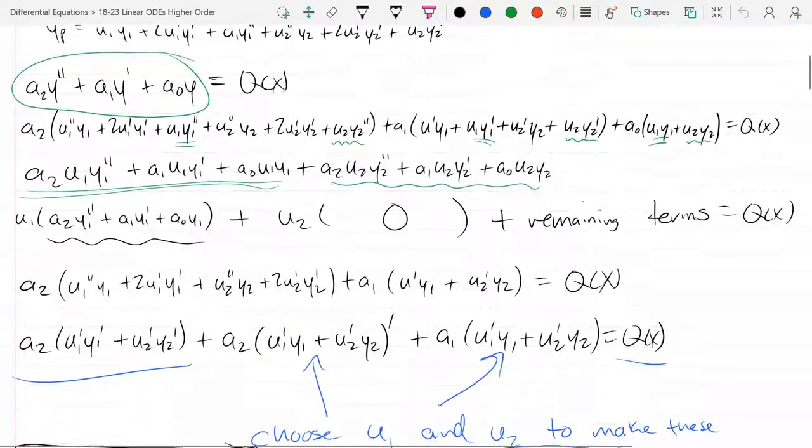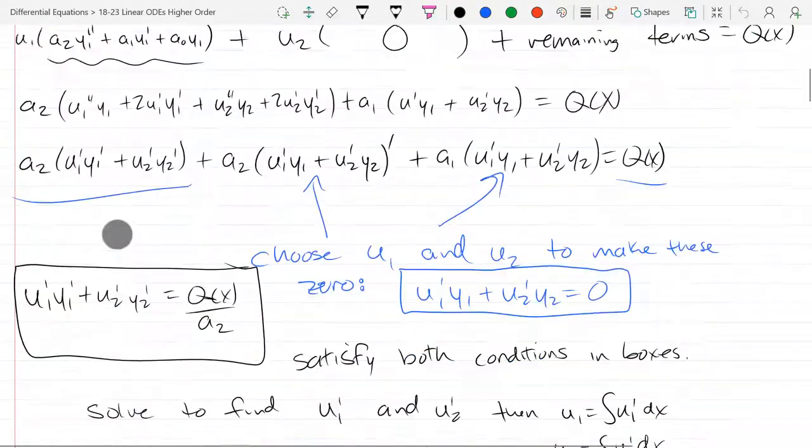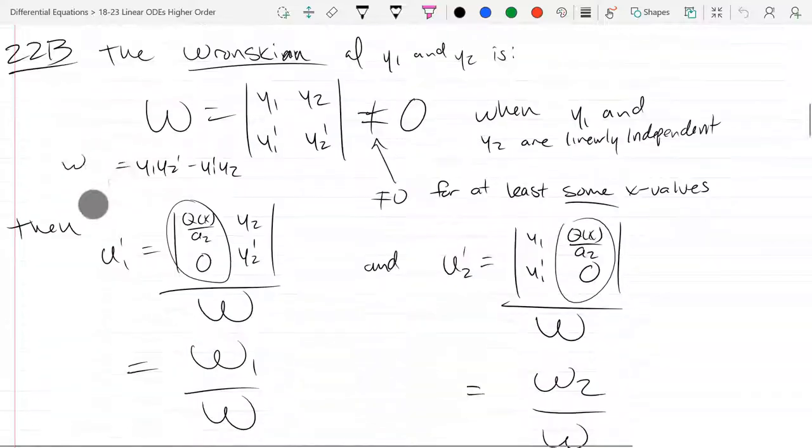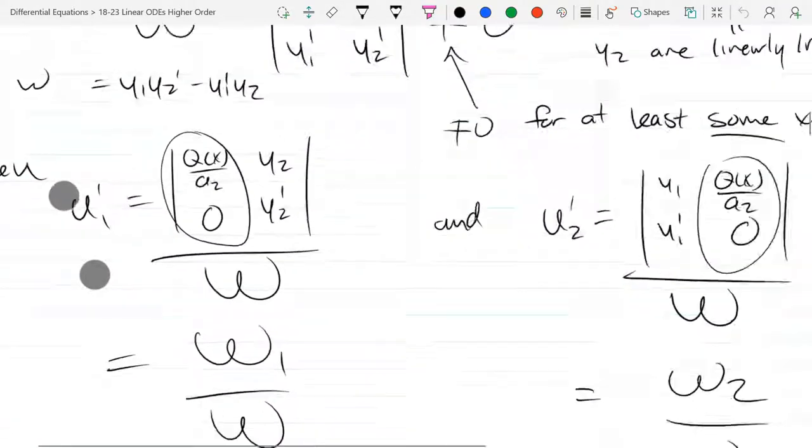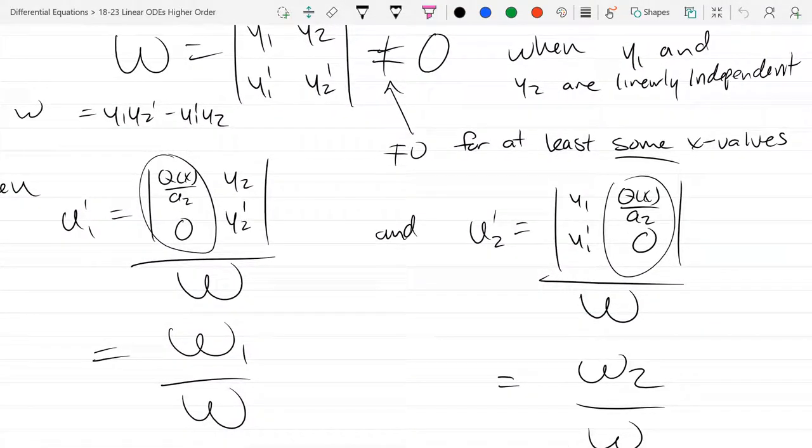Variation of parameters, we wrote some stuff down incorrectly. So these two columns right here should be reversed.